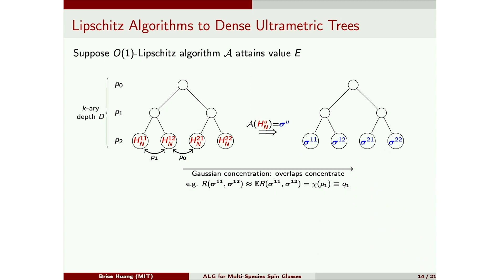But what does this mean? It's some number depending only on the correlation, P1, of the underlying pair of Hamiltonians. So this is some number depending only on P1, let's call it Q1. And any pair of siblings on the right will therefore have overlap concentrated around Q1. And similarly, any pair of cousins on the right will have overlap concentrating around some value, which we call Q0 for the same reason. So this operation of apply the algorithm to each Hamiltonian turned this hierarchically correlated tree of Hamiltonians to this ultrametric tree of points. And this map from correlations to overlaps, we call it chi, is some property of the algorithm.